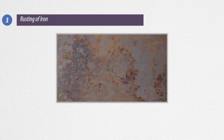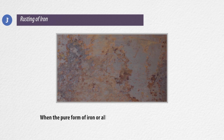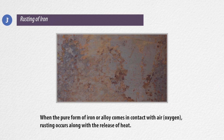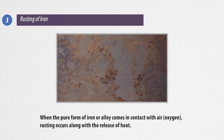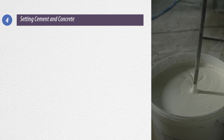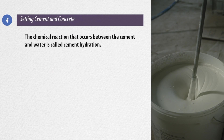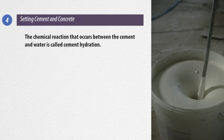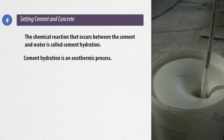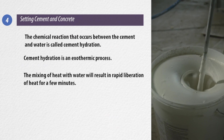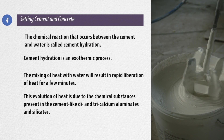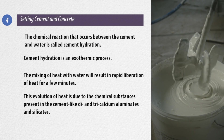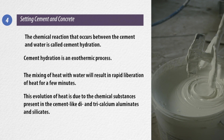Rusting of iron is also an exothermic reaction — when pure iron or an alloy comes in contact with air or oxygen, rusting occurs along with the release of heat. Setting cement and concrete is also an example of an exothermic reaction. The chemical reaction between cement and water is called cement hydration, which is an exothermic process. The mixing of cement with water results in rapid liberation of heat due to chemical substances such as tri-calcium aluminates and silicates.